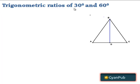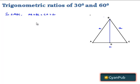Now, let us find the trigonometric ratios of 30 degrees and 60 degrees. In order to find this, let us consider an equilateral triangle ABC. In an equilateral triangle, all the sides are equal; let them be equal to some A units, and all the angles will be equal to 60 degrees each. Therefore, angle A is equal to angle B is equal to angle C is equal to 60 degrees.